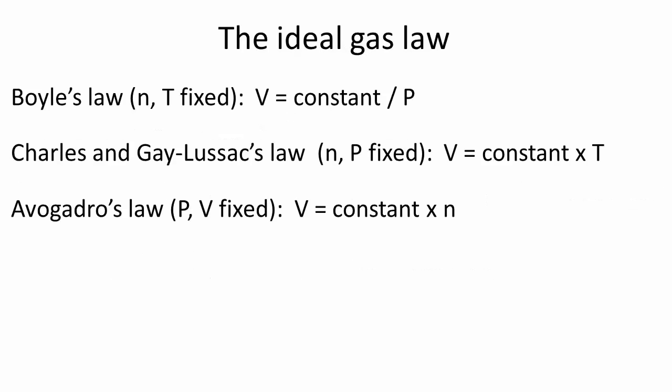These three laws can be mathematically combined to derive the famous equation PV equals nRT. What this tells us is that if we know three of the four variables of a gas—pressure, volume, amount, and temperature—the fourth one can be calculated.